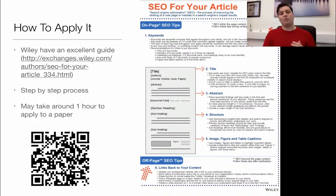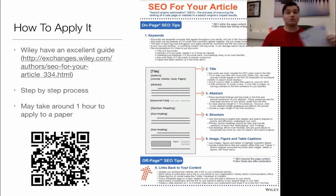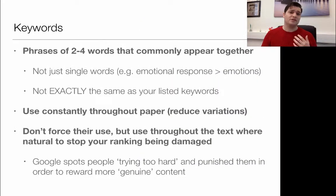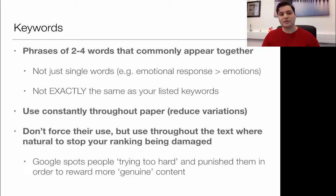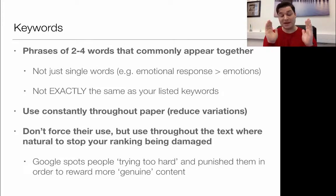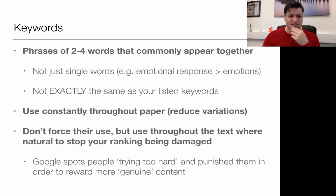So how do you apply it? Wiley have an excellent guide, which I'll put in the description link, and it even gives you a printout sheet which I use whenever I'm writing a journal. To go over the basics: you have to use keywords. Keywords are the absolute driving force of SEO. These are phrases of two to four words that commonly appear together — so rather than just saying 'emotion' or 'emotions,' you'd say 'emotional response.' You look at what keywords you're targeting for your main journal topic and work around that, riffing off it, keeping them as tight as possible.